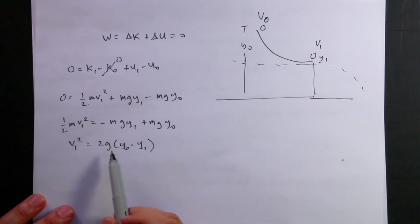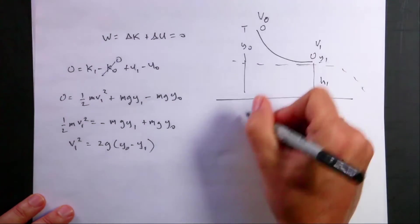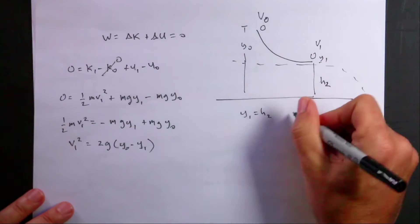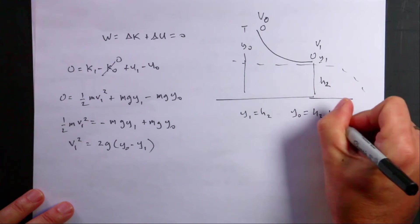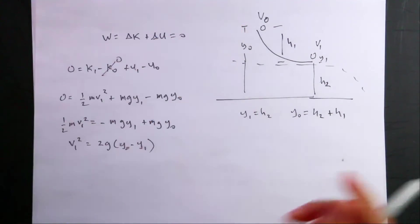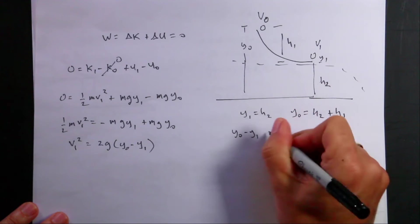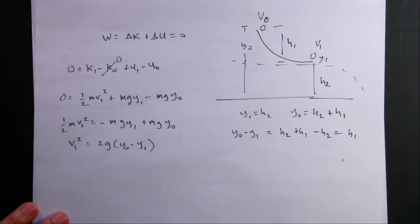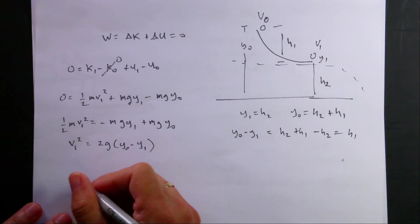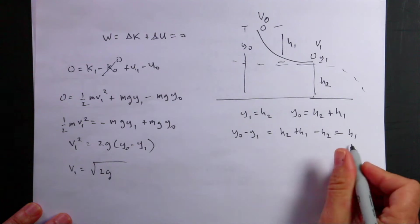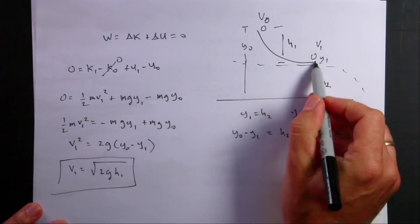The mass canceled and I factored that out. Now, let's say this is h1, so y1 is h2. Y0 is going to be h2 plus h1, right, because this is h1. So that whole height is h1 plus h2. So that means y0 minus y1 is going to be h2 plus h1 minus h2 is just h1. So now I get v1 equals the square root of 2g h1. That's how fast it's moving down here at the bottom.